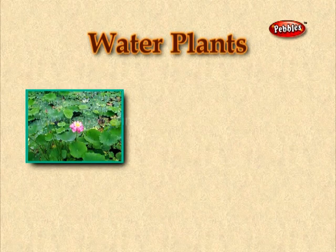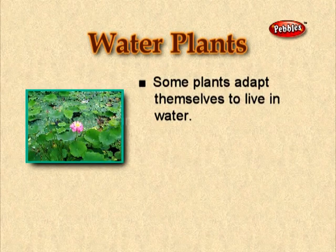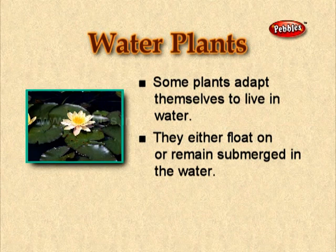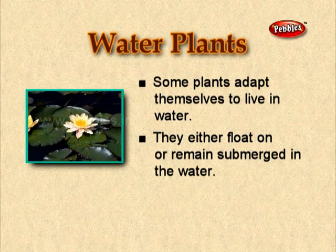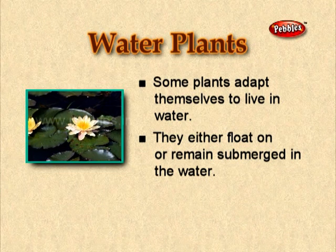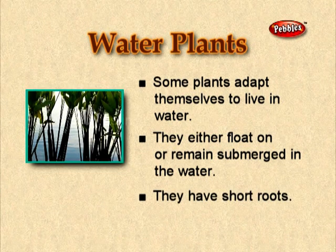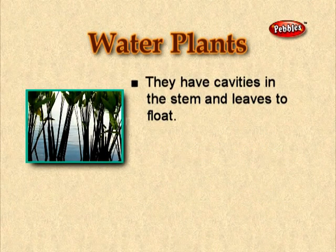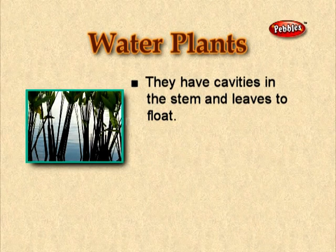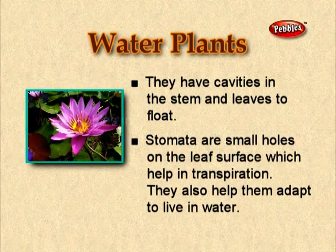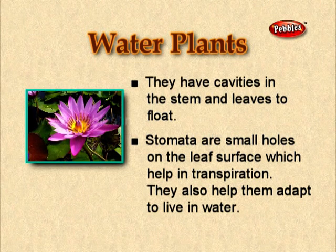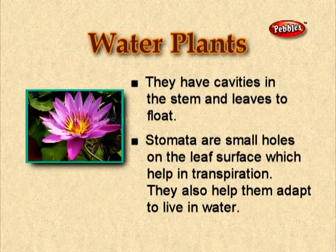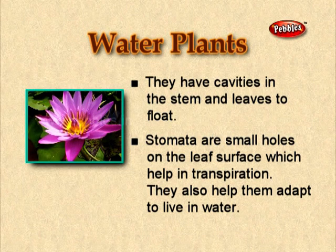Water plants. Some plants adapt themselves to live in water. They either float on or remain submerged in the water. They have short roots. They have cavities in the stem and leaves to float. Stomata are small holes on the leaf surface which help in transpiration. They also help plants adapt to live in water.